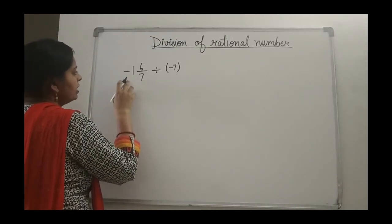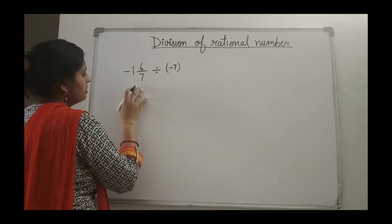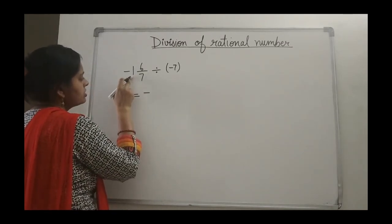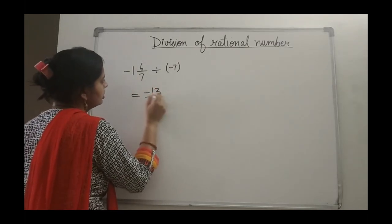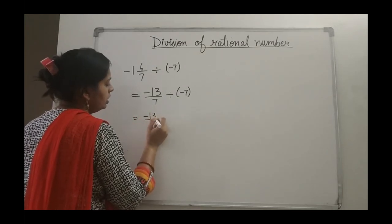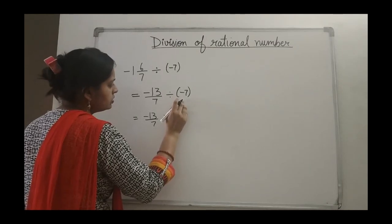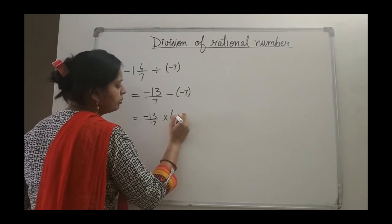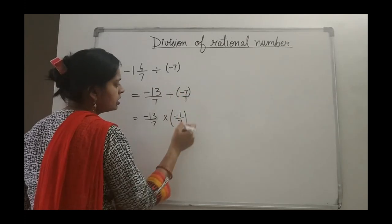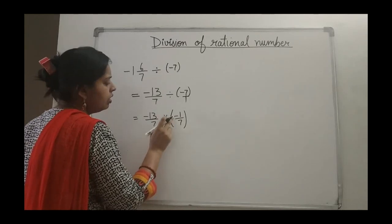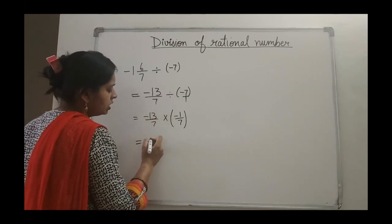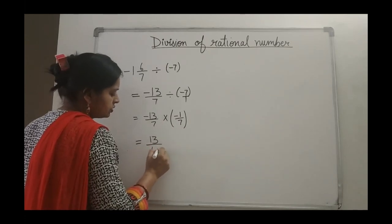See another example: minus 1 and 6 by 7 divided by minus 7. Since we have a mixed number, convert to improper: minus will remain, 7 sevens plus 6 is 13, giving minus 13 upon 7. Division means multiply by the reciprocal of the divisor. The reciprocal of minus 7 — since 1 is in the denominator — is minus 1 upon 7. Nothing gets cancelled, so minus 13 multiplied by minus 1 gives positive 13, and 7 times 7 is 49. The answer is 13 upon 49.